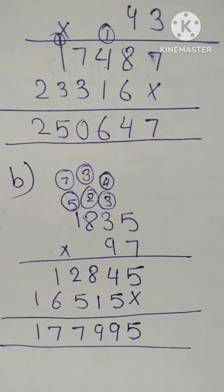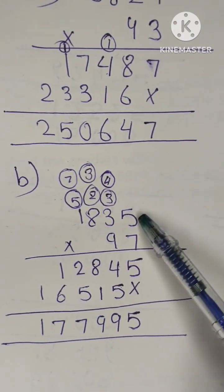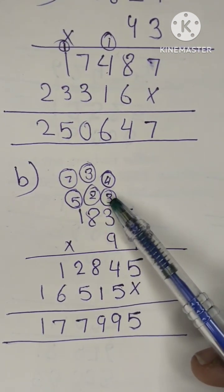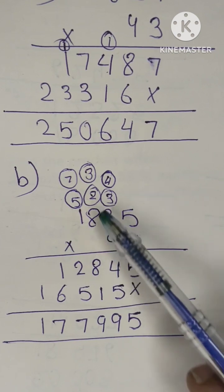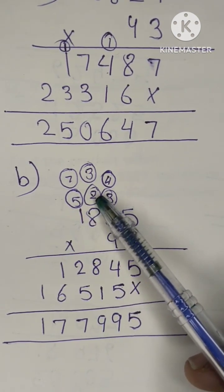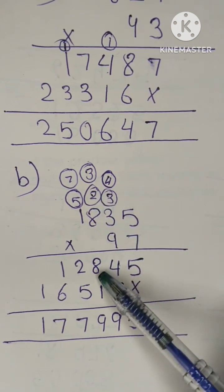Now we have our next question. 7 times 5 is 35, put 5 here and carry 3. 7 times... 21, add 3 from carry equals 24, put 4 here and carry 2. We will multiply 7 and 8 and add to get 58.